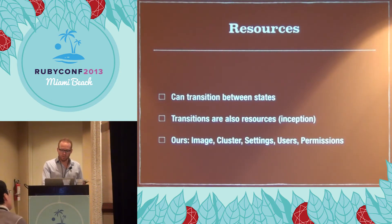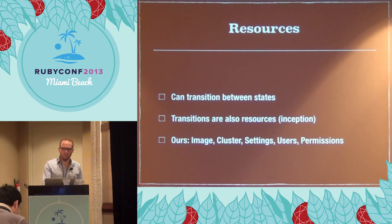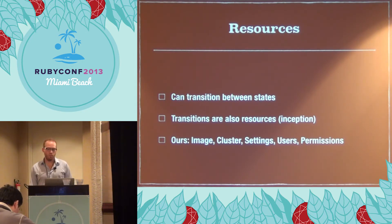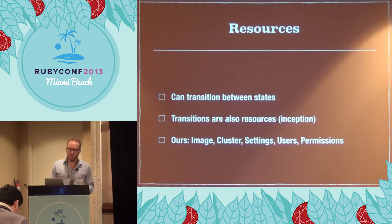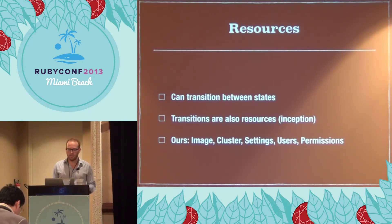The resources transition between states. Transitions are also a resource — this is part of auditability, we want to know every transition. Our resources are image, cluster, settings, users, and permissions.